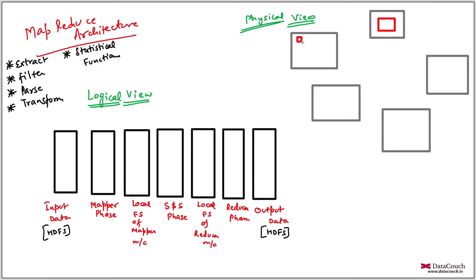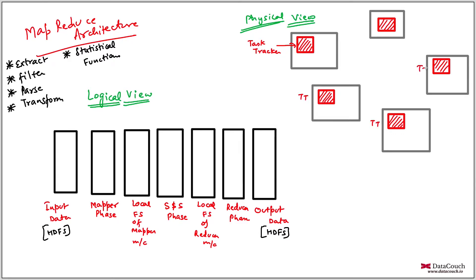In the master machine, there is a daemon running called the Job Tracker. In each worker machine there is a daemon called the Task Tracker. There is another daemon related to the Data Node also running in parallel to the Task Tracker — this is the worker daemon of HDFS — because MapReduce is running on top of HDFS.